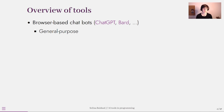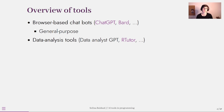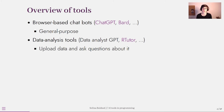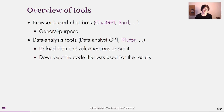Browser-based chatbots are really nice for interactive learning and brainstorming, but they can also help you debug your code if you give them your error messages. Next, there are also AI tools specifically designed for data analysis, like Data Analyst GPT or RTutor. These are based on large language models but they can also read files, execute code, and give you actual results — so you can upload your data, ask questions about it, and download the code used to generate the results.